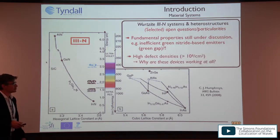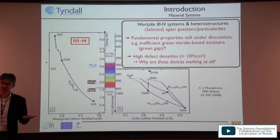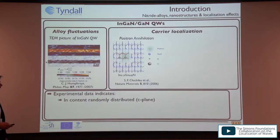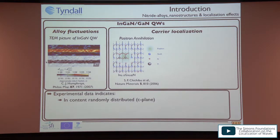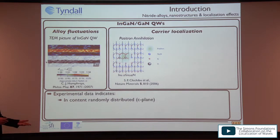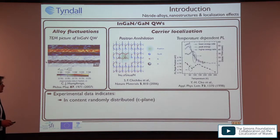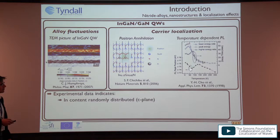A key question is why these materials work at all given very high defect densities, which would make indium arsenide or gallium arsenide systems basically dead. One widely used explanation involves alloy fluctuations in InGaN quantum wells. TEM pictures show fluctuations in the InGaN region, and early positron annihilation measurements by Chichibu et al. showed that with indium present, strong carrier localization effects keep carriers away from defects. Further indications come from the well-known S-shape behavior of the PL peak position with temperature.